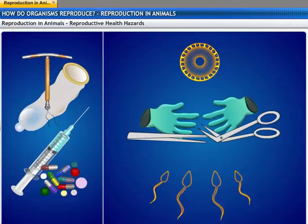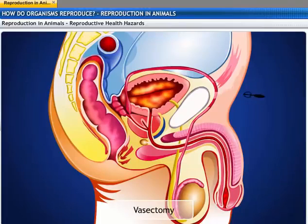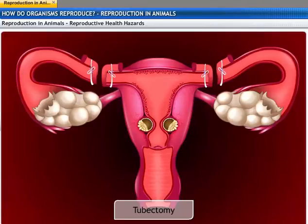Apart from contraceptives, surgical methods can also be used to create blocks in the man and the woman to prevent the transfer of sperm and egg cells. In males, the vas deferens is blocked to prevent the passage of sperm. In females, the oviduct is blocked to prevent the passage of eggs. These methods have side effects too.